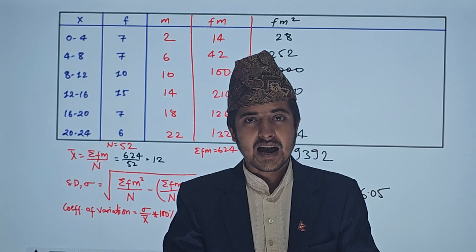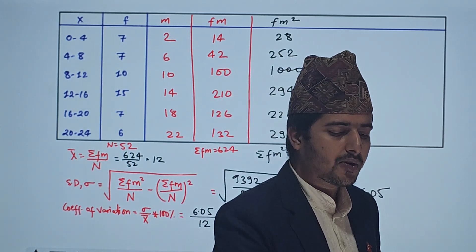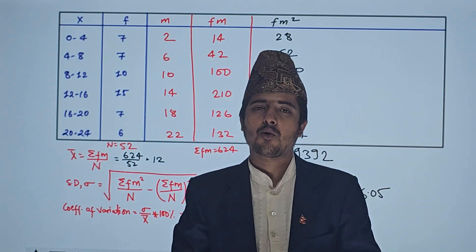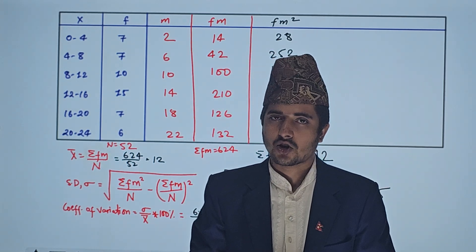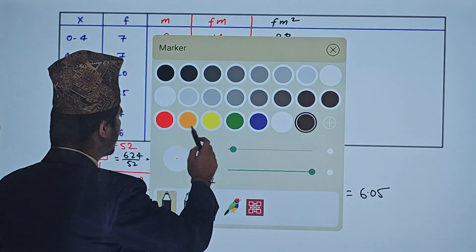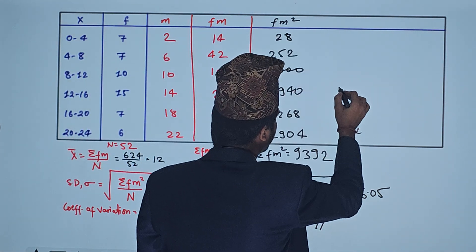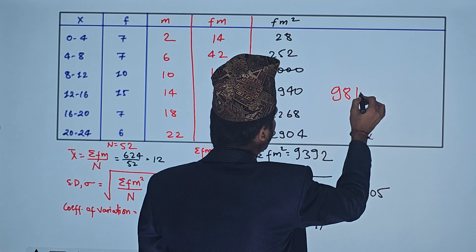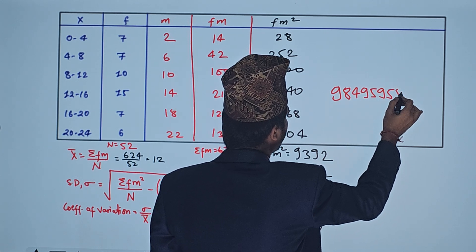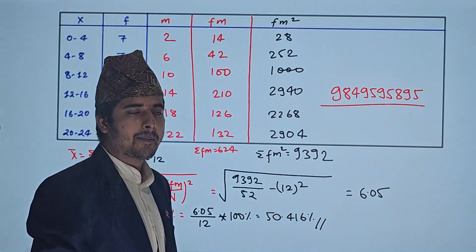The coefficient of variation is 6.05 and the coefficient of variation is approximately 50.4%. If you have any questions, your contact number is 98495-95895. Your number is very important.